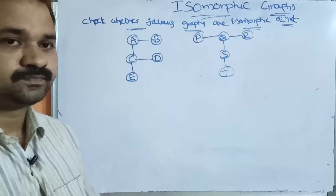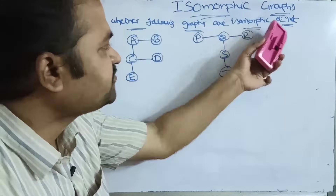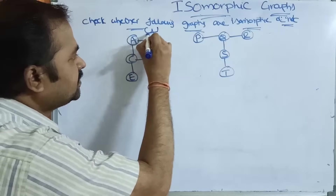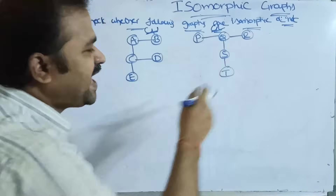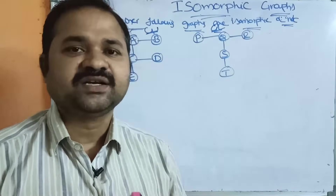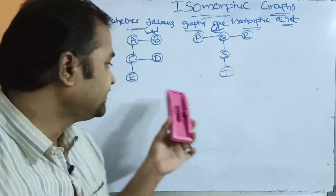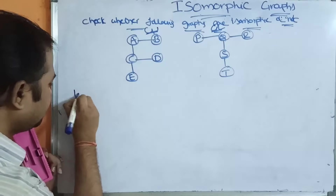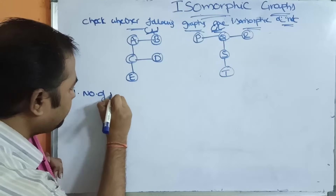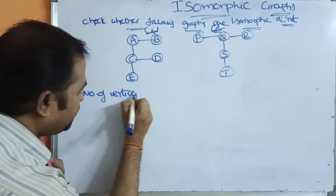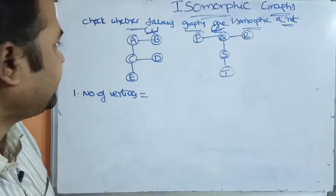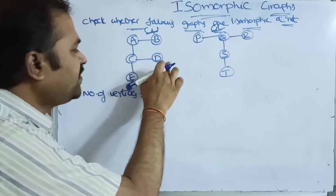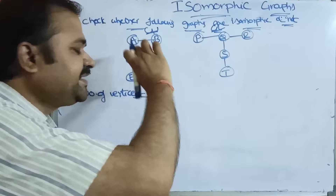Let us see an example. Check whether the following graphs are isomorphic or not. This is graph one and this is graph two. We have to satisfy those six conditions. The first condition is to find out the number of vertices. Graph one has vertices: first, second, third, fourth, fifth — so graph one contains five vertices.